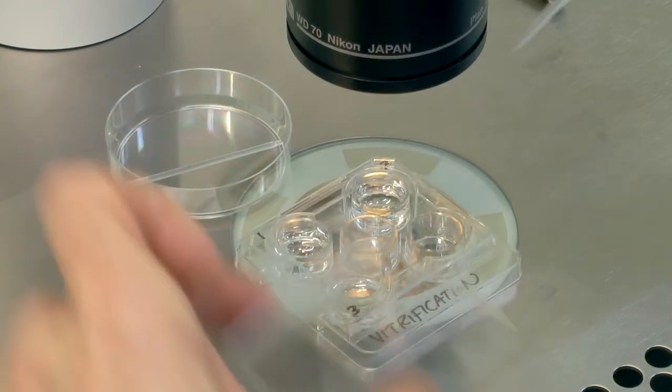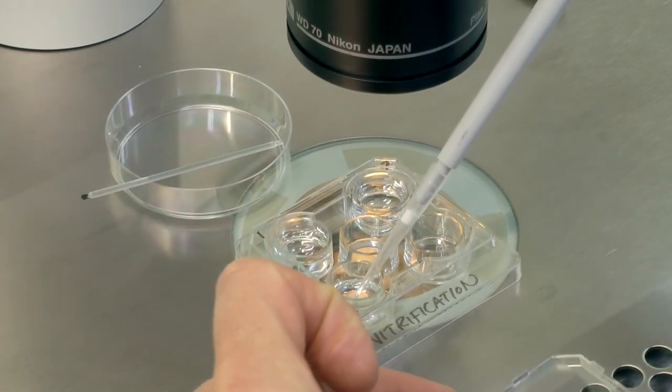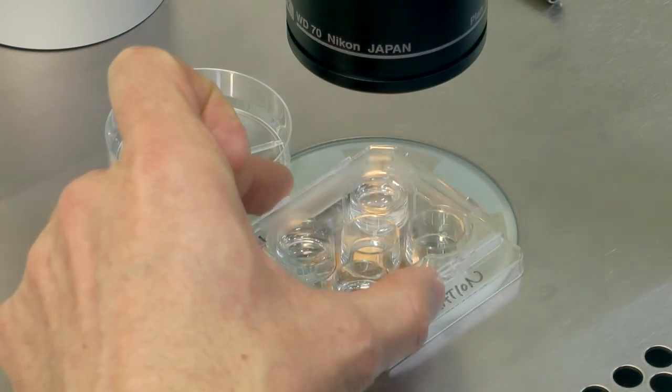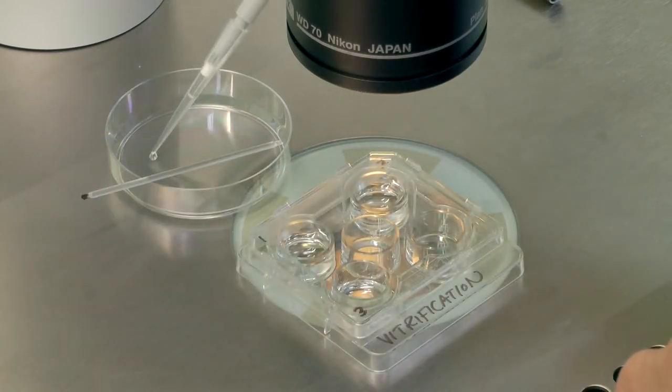When 30 seconds in the second solution remain, make two 50 microliter droplets from the third solution in the sterile dish where you've placed the RapidEye before.